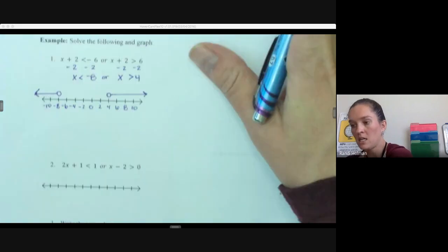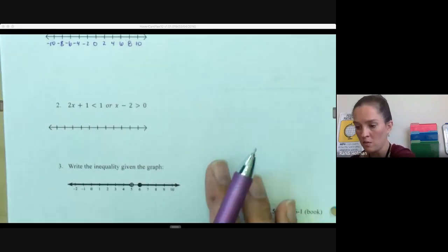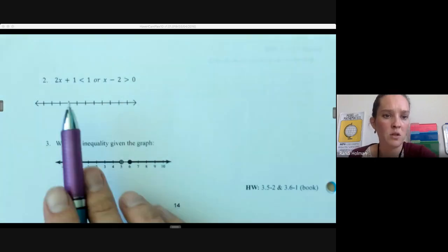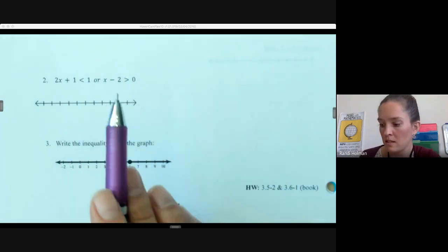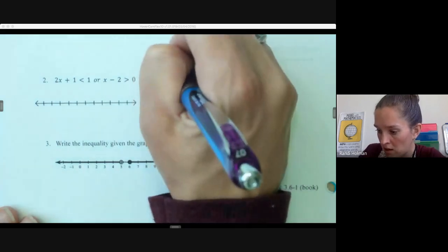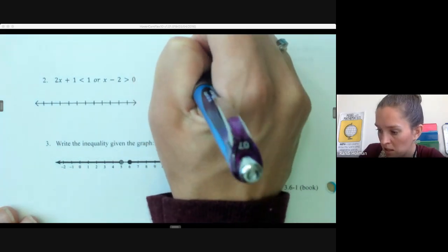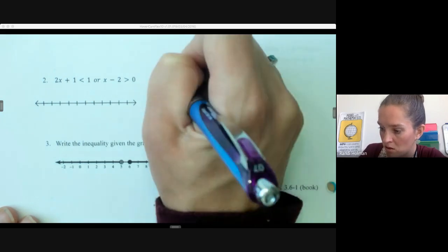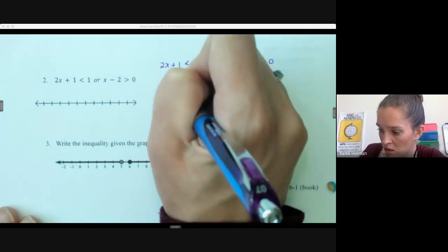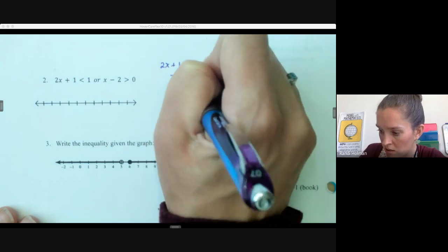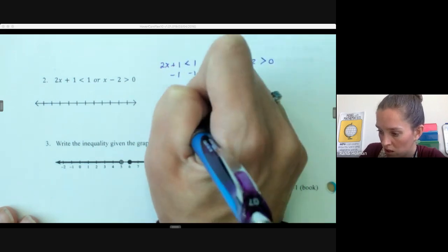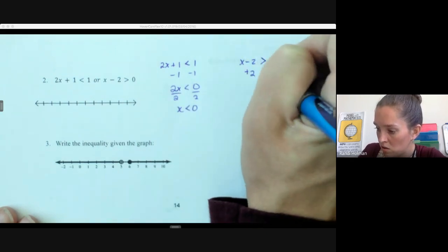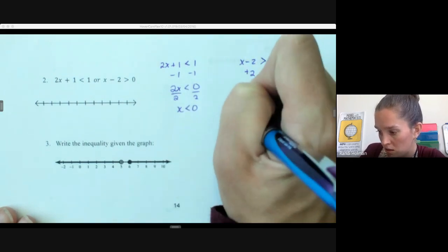Alright, let's take a look at one more here solving. So we have 2x plus 1 is less than 1 or x minus 2 is less than 0. So again, we're just going to look at those two inequalities independently and then graph them on the same graph. So subtract 1, 2x is less than 0, divide by 2. Add 2, x is less than 0. Add 2, x is greater than 2.